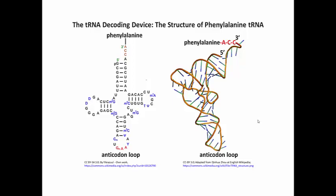tRNA is the decoding device because at one end it has a site to attach an amino acid, and usually has one at that 3' end. And at the other end of this molecule, when it is folded over, is the anticodon in what's called the anticodon loop.